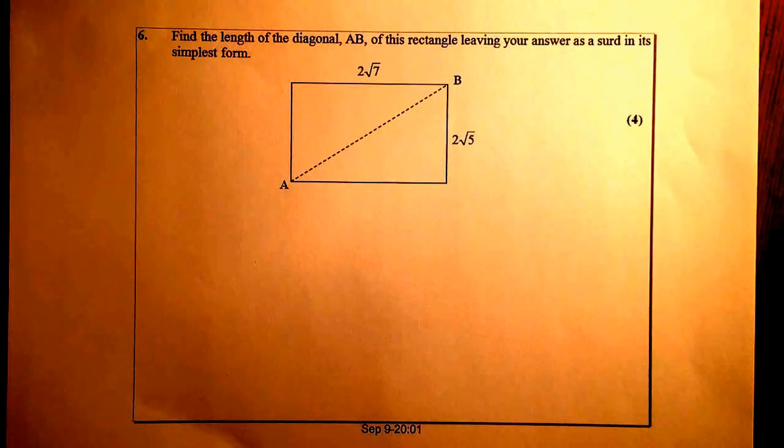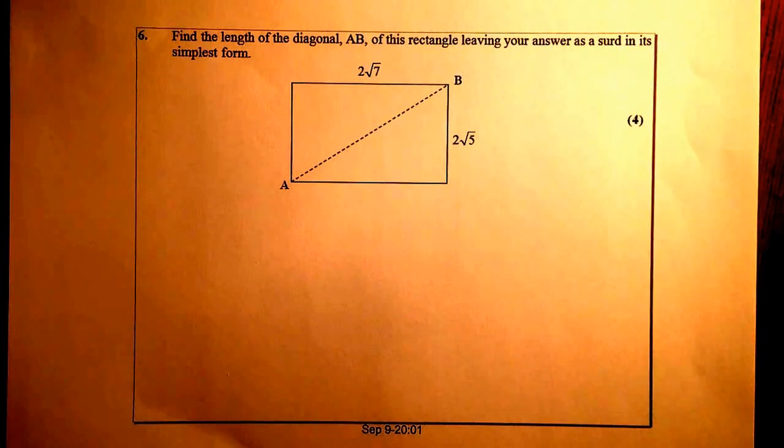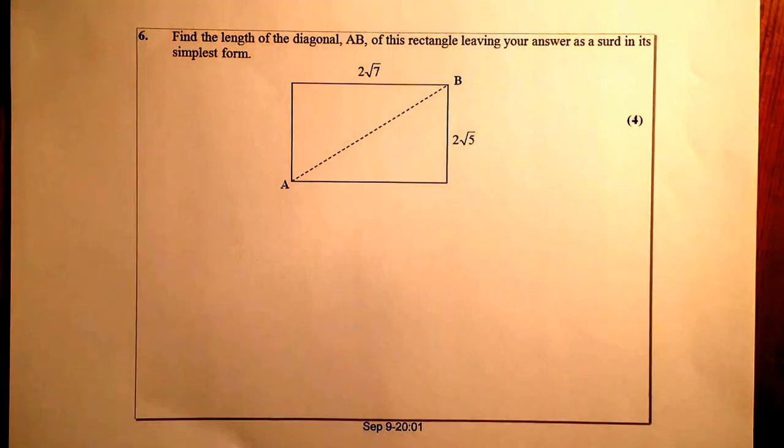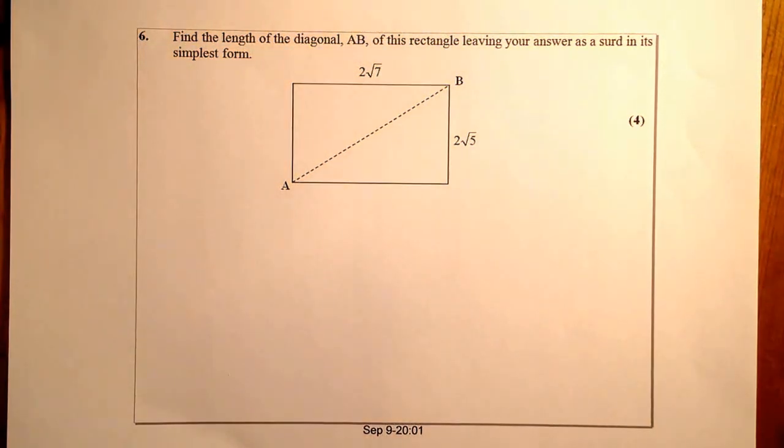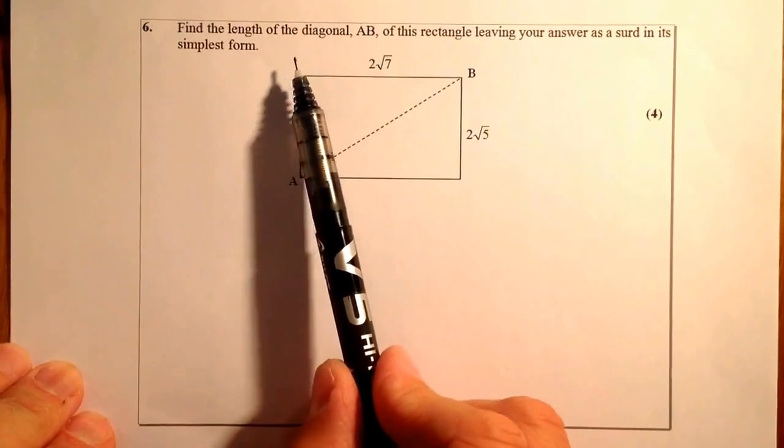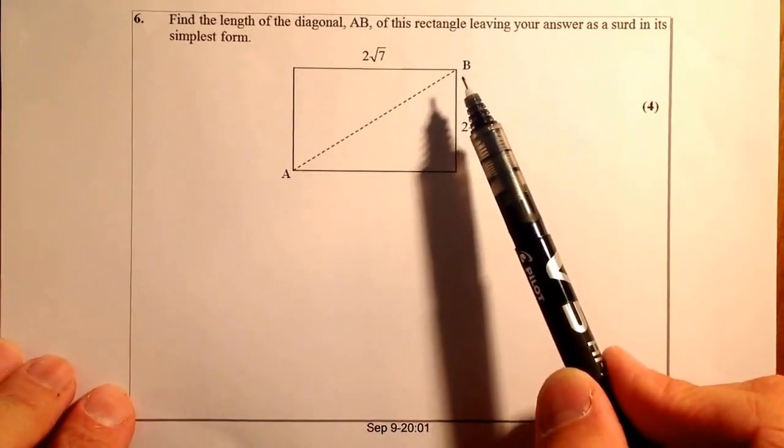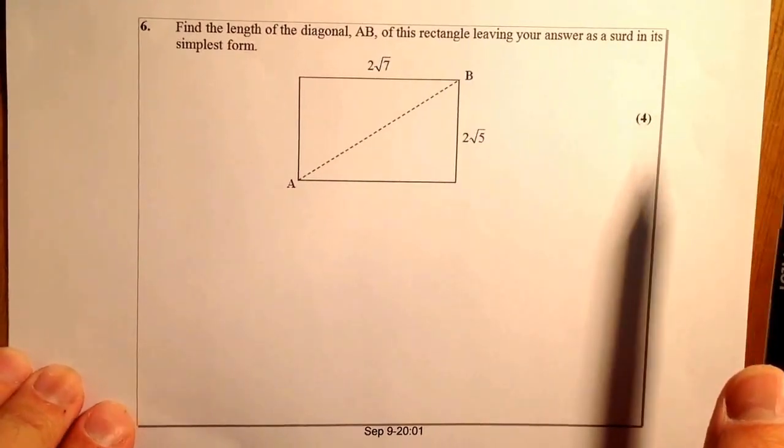This is National 5, it's the SIRS homework, question number 6, using Pegasus Resources 2013. Find the length of diagonal AB of this rectangle, leaving your answer as a surd in its simplest form.